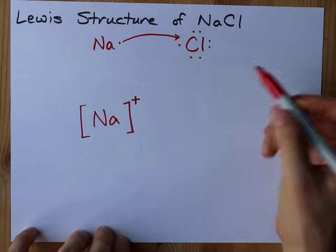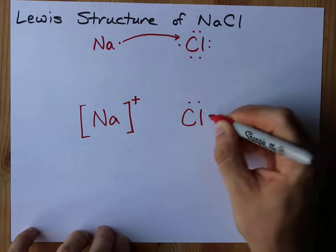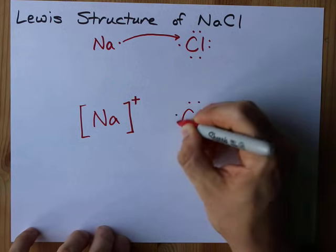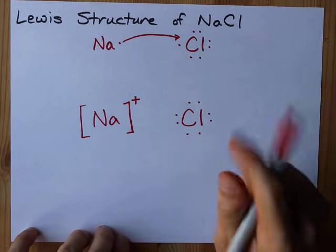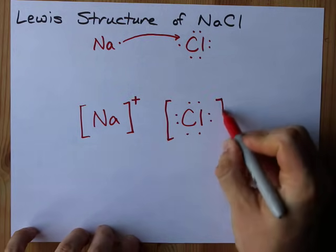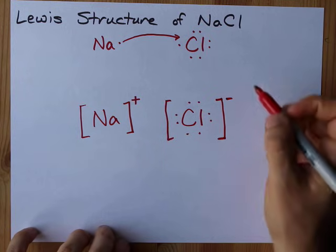Chlorine can do the same thing, except now it has an eighth electron. Eight. Good! That means the octet rule is satisfied. I put it in square brackets and it gets a minus charge.